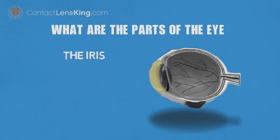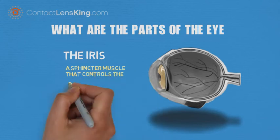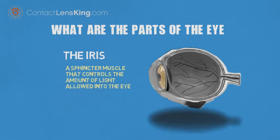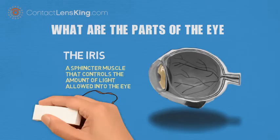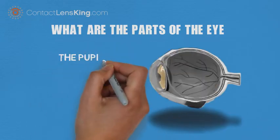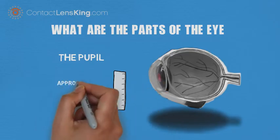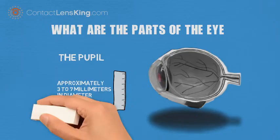The iris. The iris is the pigmented color portion of the eye. The iris contains a sphincter muscle that controls the amount of light allowed into the eye through contraction and dilation, similar to a camera aperture. The pupil is a hole approximately 3 to 7 mm in diameter through which light passes.